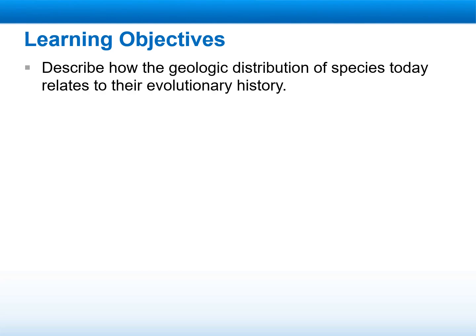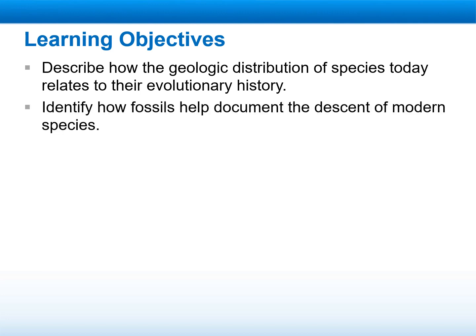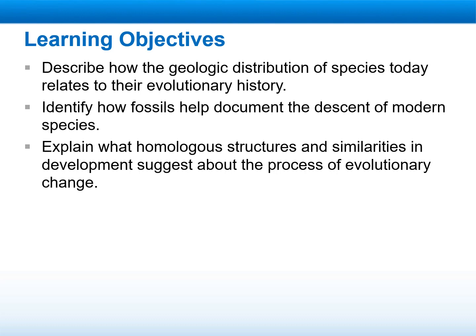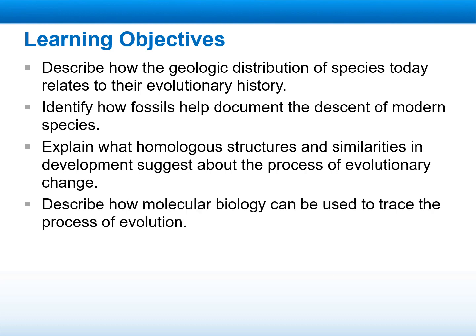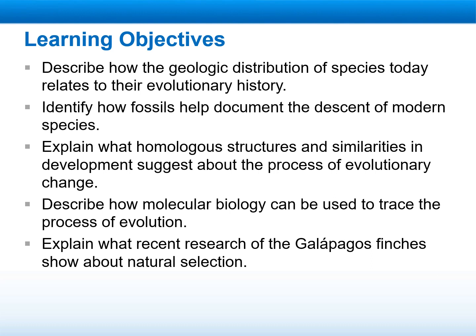Our objectives for this lesson are to describe how the geologic distribution of species today relates to their evolutionary history, to identify how fossils help document the descent of modern species, explain what homologous structures and similarities in development suggest about evolutionary change, describe how molecular biology can be used to trace evolution, and explain what recent research of the Galapagos finches shows about natural selection. Think about what evidence you already know of that supports Darwin's theory.